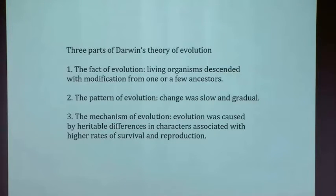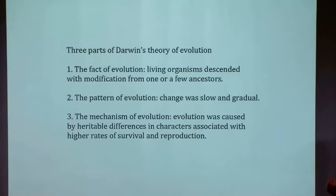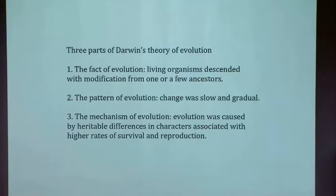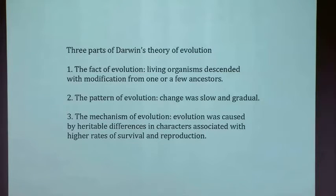The second part of Darwin's theory is that he proposed a specific pattern of evolution. Not only did evolution occur, but it occurred in a specific way. It occurred slowly, gradually, and so slowly that it was imperceptible from a human perspective. Even though evolution occurred, you don't see it occurring. He had to account for the fact that we don't see species changing every day — or at least people didn't think so until they looked very closely.